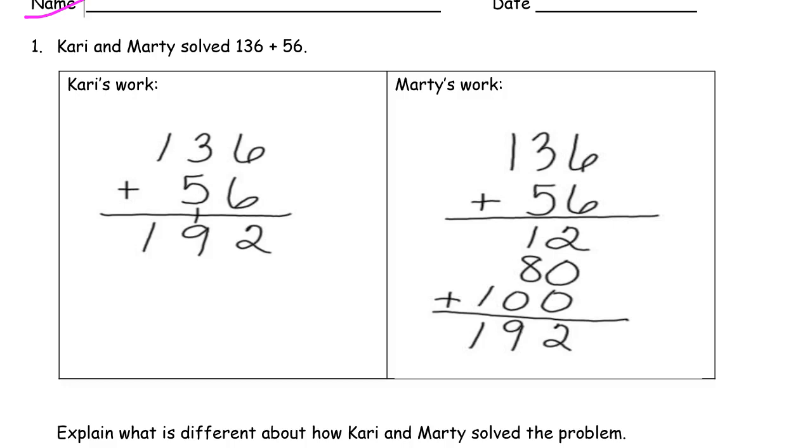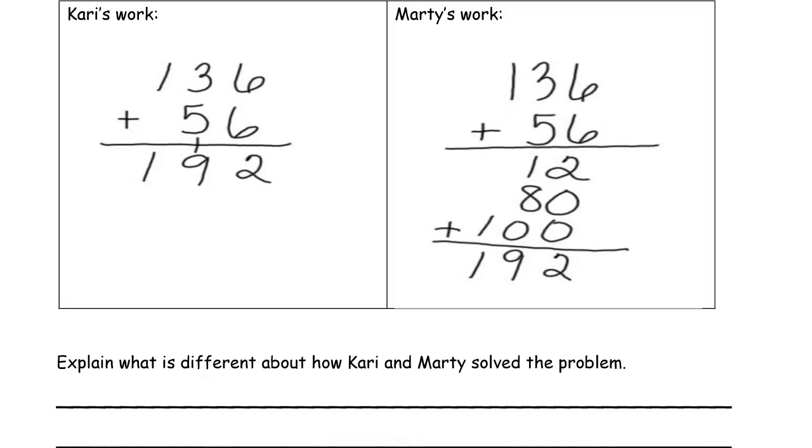Now we're looking at Carrie and Marty's work. They both solved 136 plus 56. Carrie used new groups below and Marty used totals below.